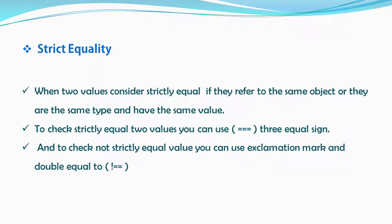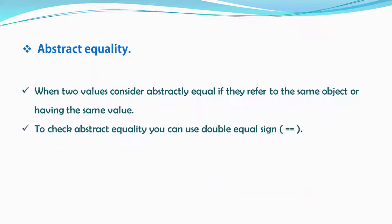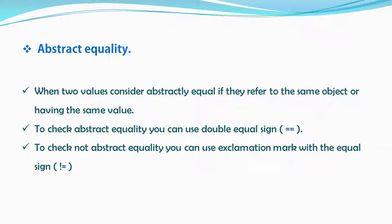Now let's move on to the next type: abstract equality. Two values are considered abstractly equal if they refer to the same object or have the same value. To check abstract equality, you can use double equal sign. And to check not-abstract equality, you can use an exclamation mark with the equal sign.